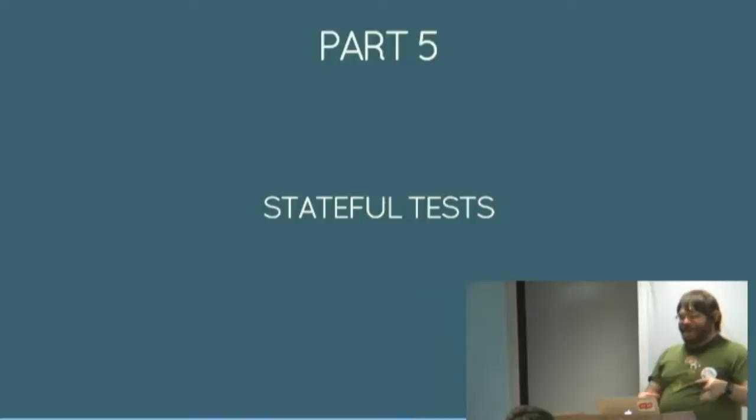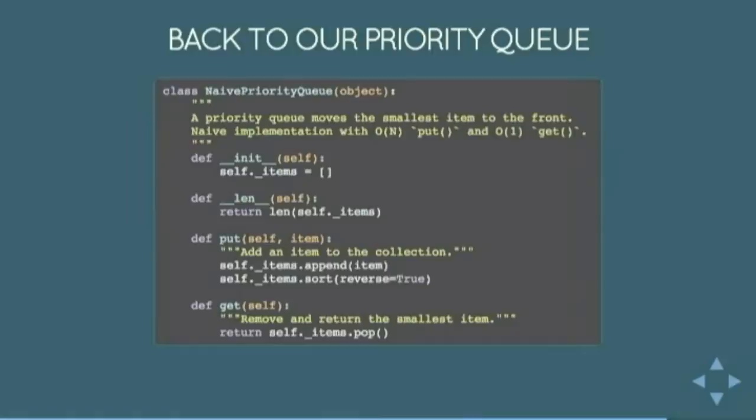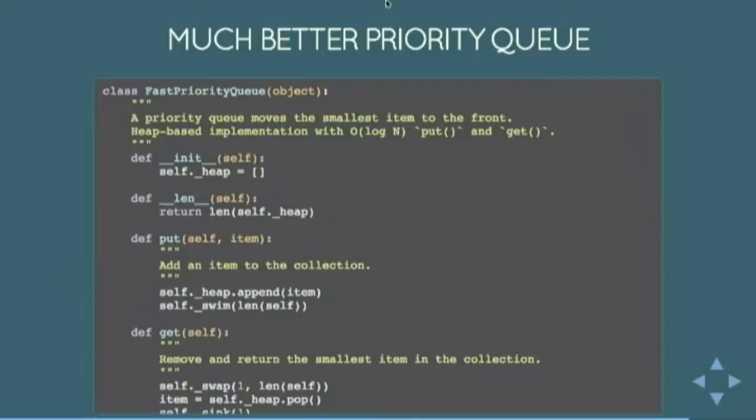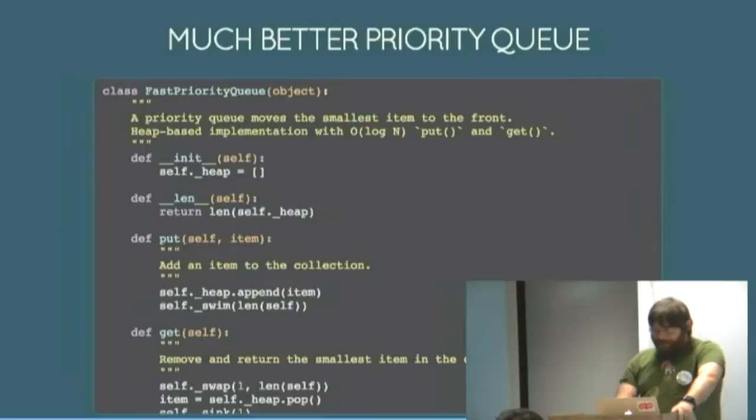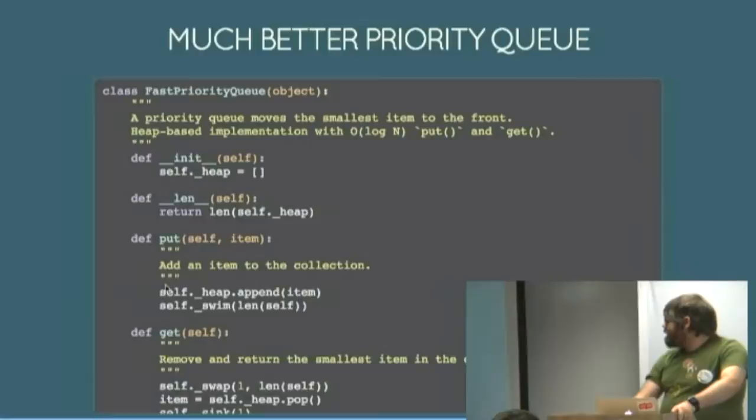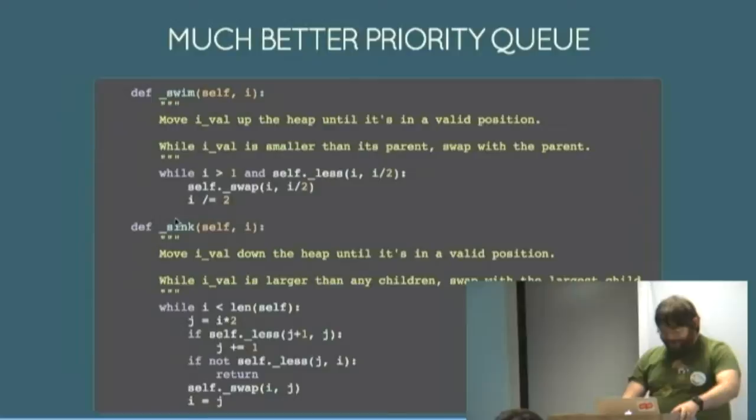Now what about testing things that have state in them. So back to the priority queue you'll notice that the test we had previously, all they tested was you put a bunch of stuff in, you get a bunch of stuff out. They didn't test any interleaving of putting things in and taking things out. Here's our priority queue that we had previously, it's the same code. Here's a much better one which is much bigger and more complicated and uses a binary heap to get order log n operations instead of order n. Much better but also much more complicated.